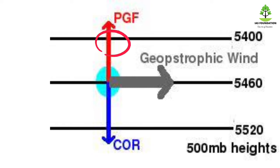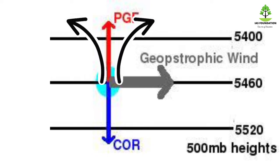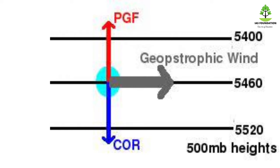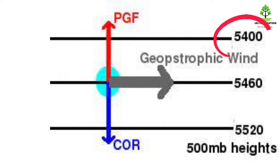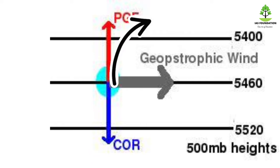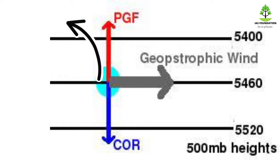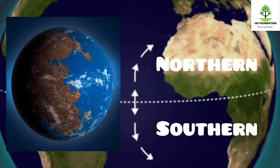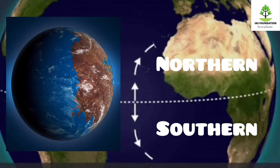But the Coriolis force deflects the wind to the right side in the northern hemisphere and to the left side in the southern hemisphere. In the northern hemisphere, the wind deflects to the right. In the southern hemisphere, the wind from the high pressure area deflects to the left side. So remember: north hemisphere deflects right, south hemisphere deflects left.